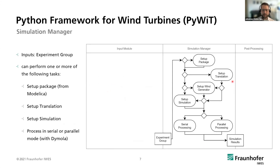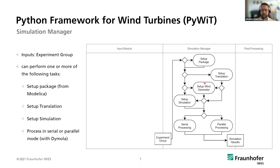The second step is the simulation manager, which is the core of the program. First, you need to set up the package — that is what Movis does. All the equations needed for simulating the wind turbine are coded in Movis, and the Python framework sets up this package to choose the right turbine and equations. After that, there is the setup of the translation, where the code is translated into C code so it can be solved by Daimler. There is also an optional step for generating wind fields when using complex wind physics. The last step is setting up the simulation, where you can change parameters such as wind speed or select a wind field.